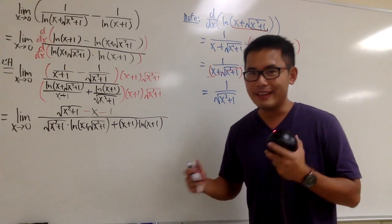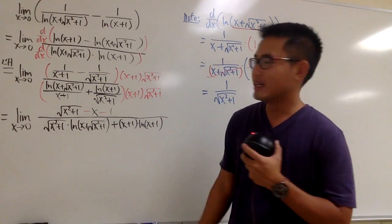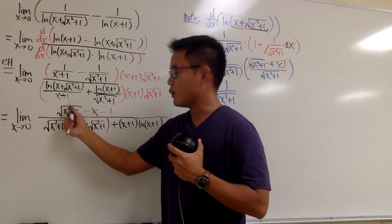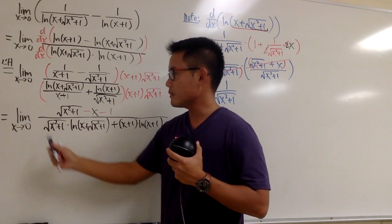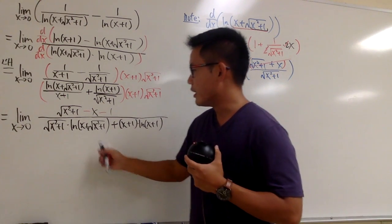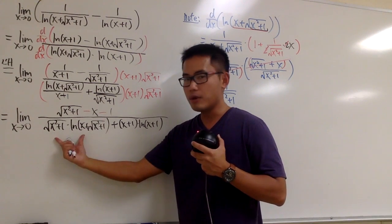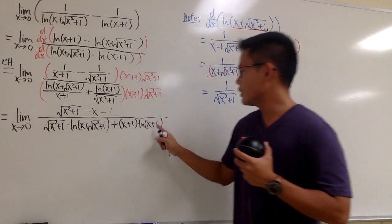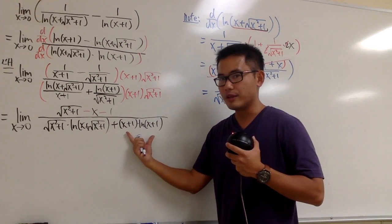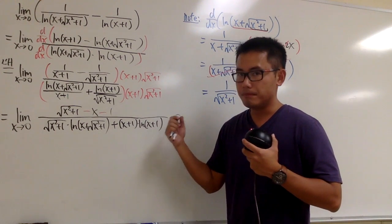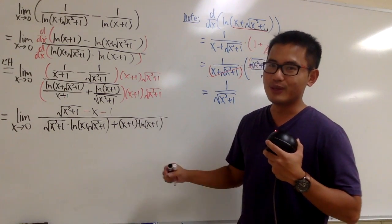Now let's plug in 0 to see what we get. On the top: √(0+1) − 0 − 1 = 1 − 1 = 0. On the bottom: when we plug in 0, both ln terms become ln(1) = 0, so the bottom is 0 as well. We still have 0 over 0, but we can apply L'Hôpital's rule again — just don't give up!